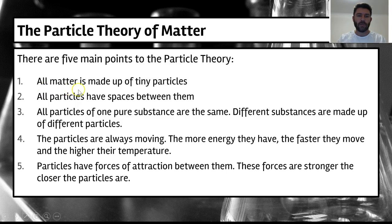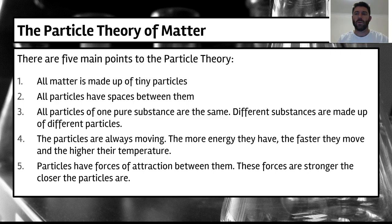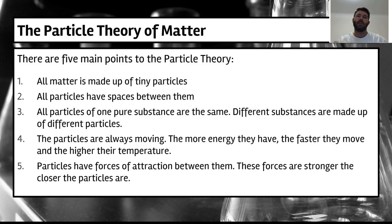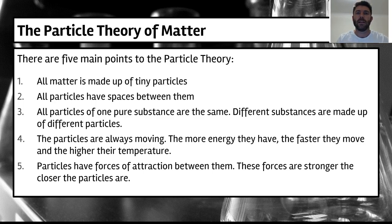Number one: all matter is made of tiny particles. Number two: all particles have spaces between them — there is actually empty space between the particles. Number three: all particles of one pure substance are the same, and different substances are made of different particles. For example, particles in gold are not the same as particles of copper — they have different sizes and different masses.